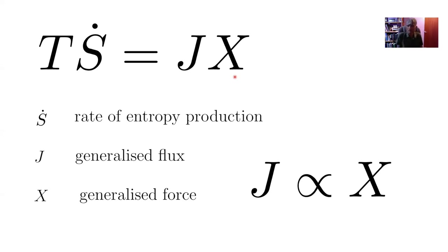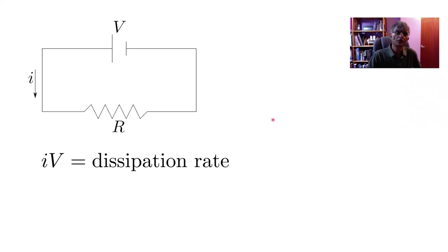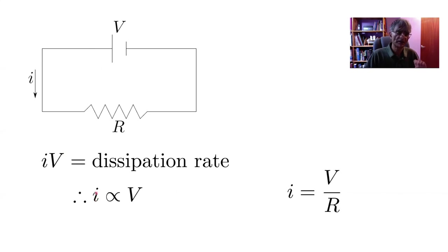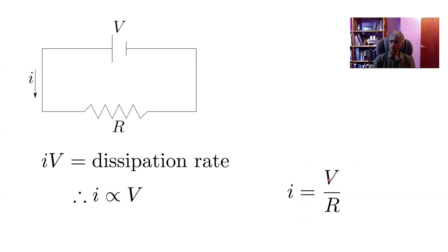The first example involves Ohm's law: driving an electrical current across a resistor. In this electrical circuit, the force driving the electrical current is the voltage, and energy is dissipated as the current passes through the resistor. The dissipation rate is the electrical current times the voltage. From the earlier equation we can assume that the electrical current is proportional to the voltage — and indeed that is Ohm's law, where the electrical current equals the voltage divided by the resistance R.